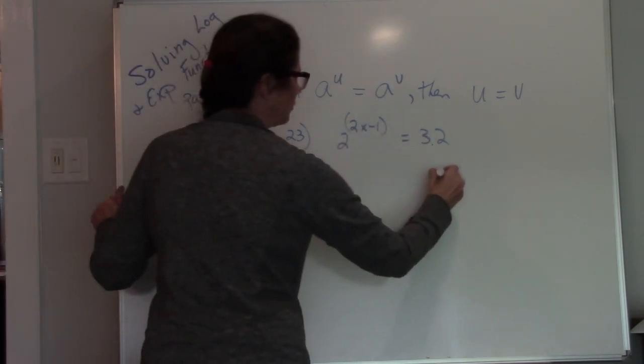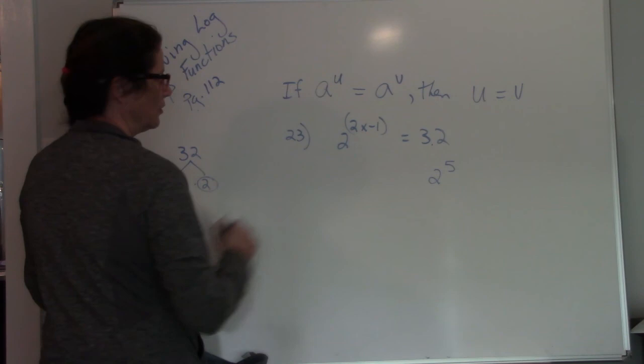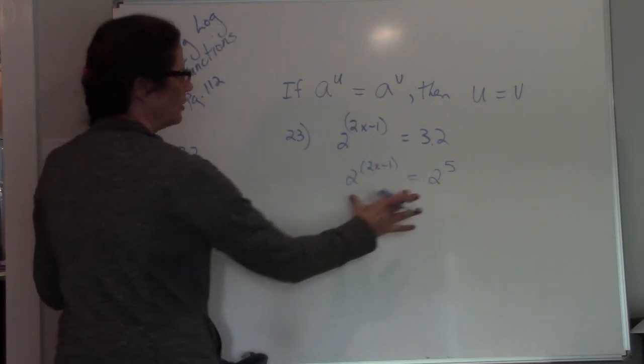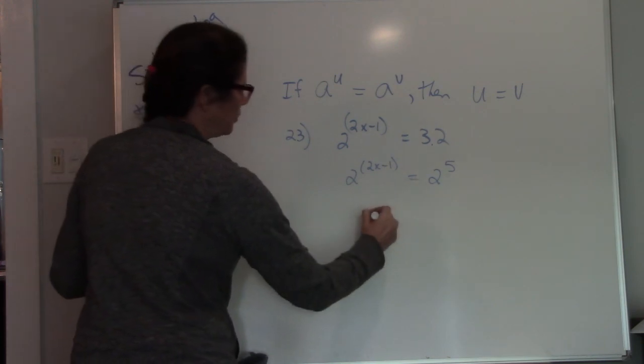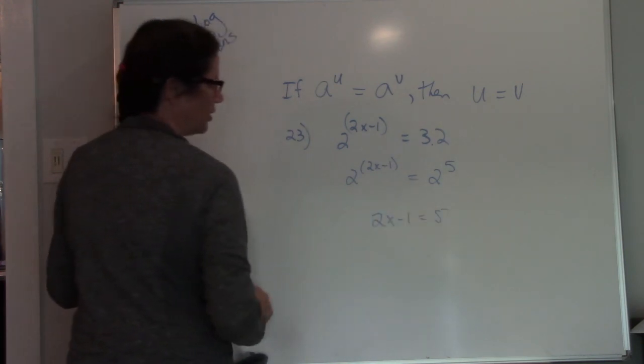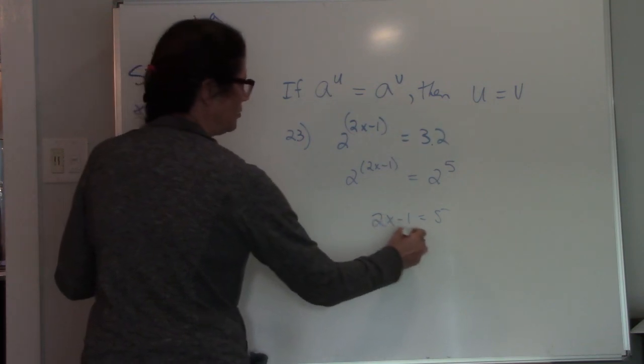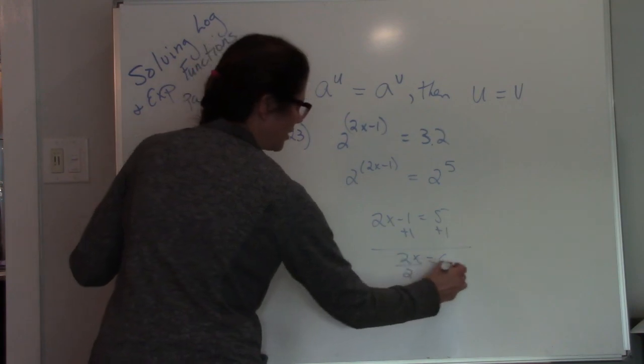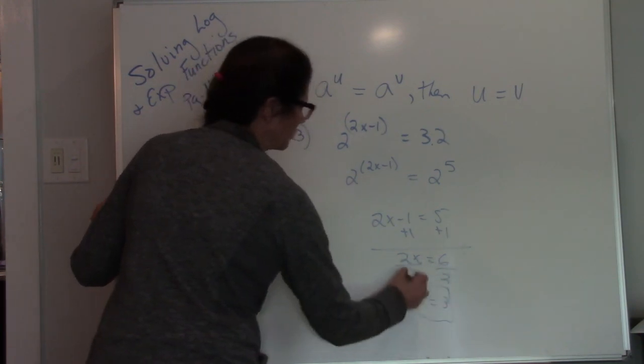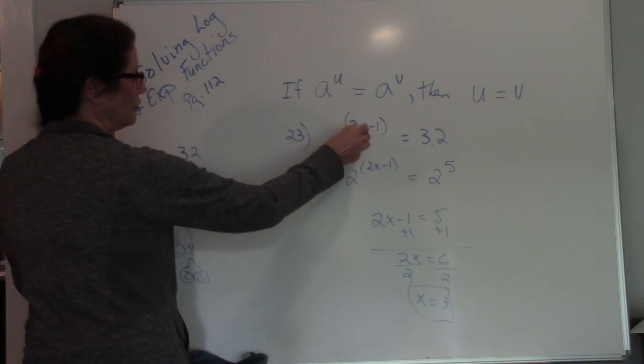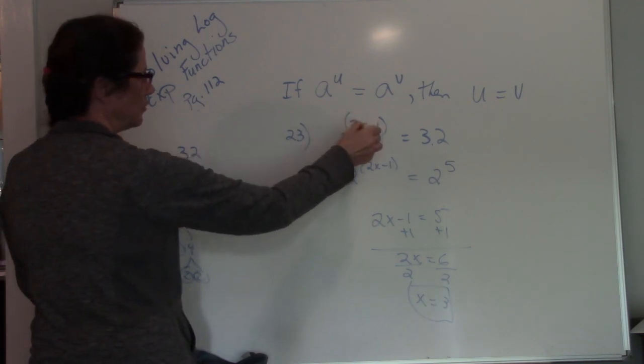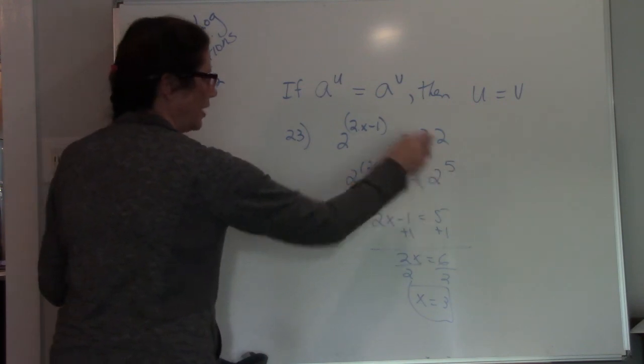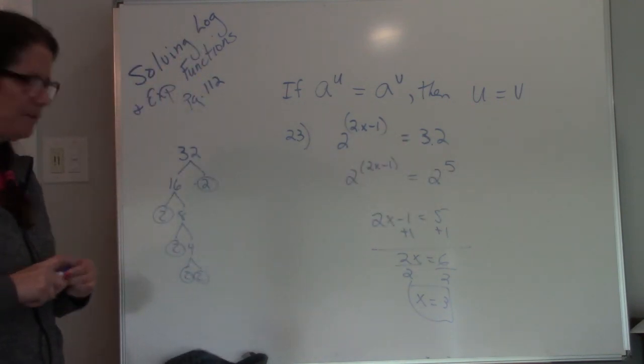So this 32 can be rewritten as 2 to the 5th power. So I have 2 to the 2x minus 1 equals 2 to the 5th. The bases are the same, which means my exponents can be set to equal each other. I have a 2-step equation. 2x equals 6. Divide both sides by 2, and I get x equals 3. Plug it back in. 2 times 3 is 6. 6 minus 1 is 5. 2 to the 5th is the same as 2 to the 5th. I know I did it correctly. And that's it.